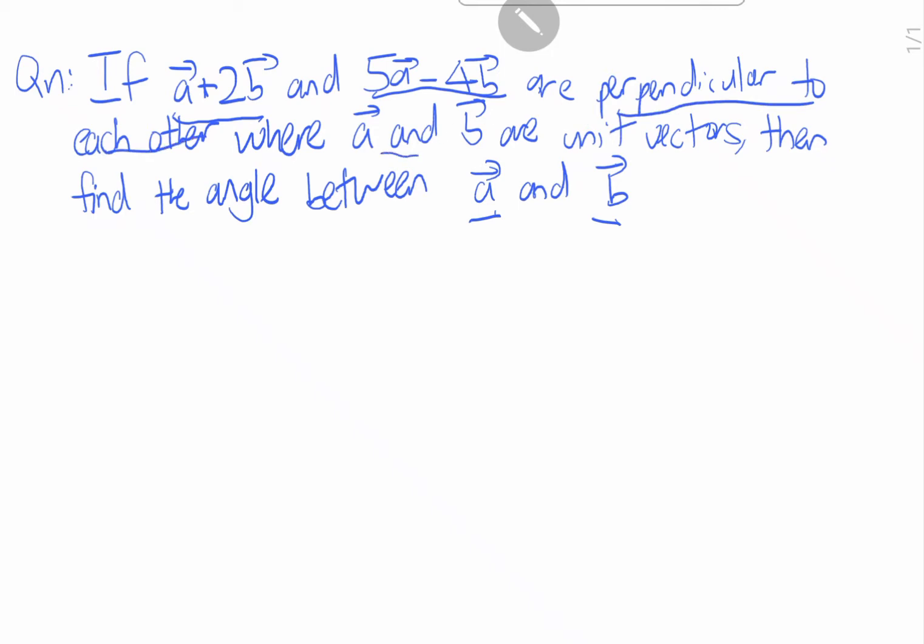Where A and B are unit vectors. Now we are going to learn, we want to find the angle between, let's say this is vector B, vector A. If you want to find this angle, it's right. So now we are given this info.